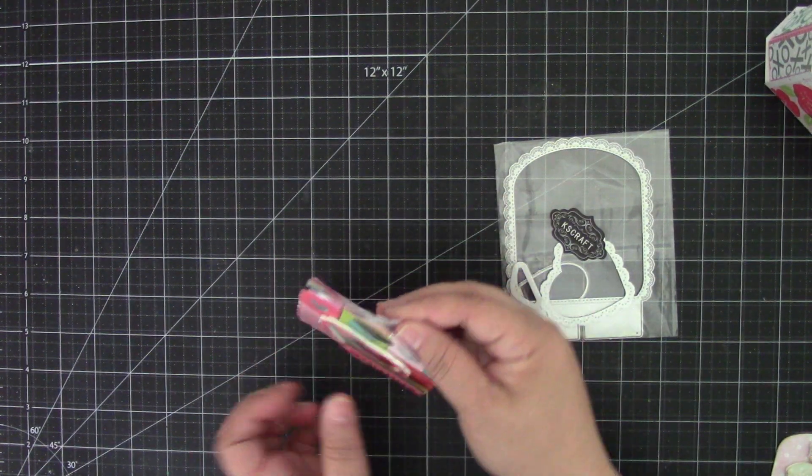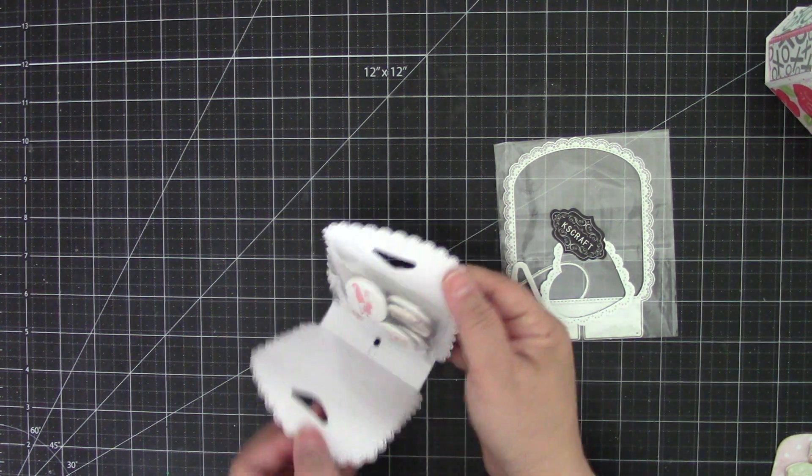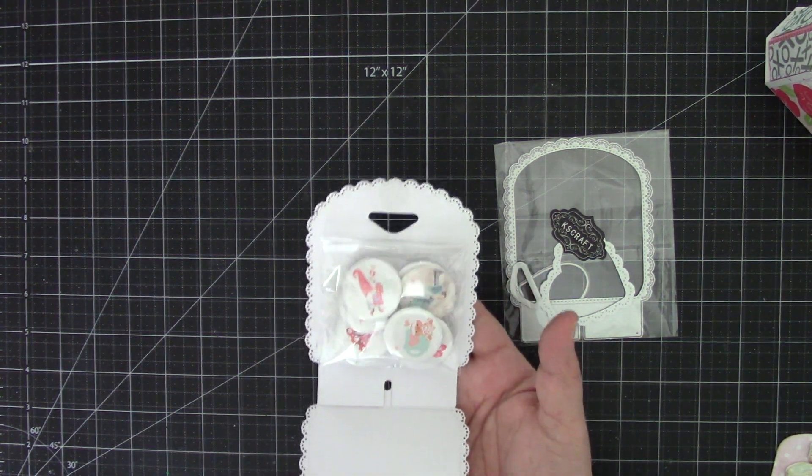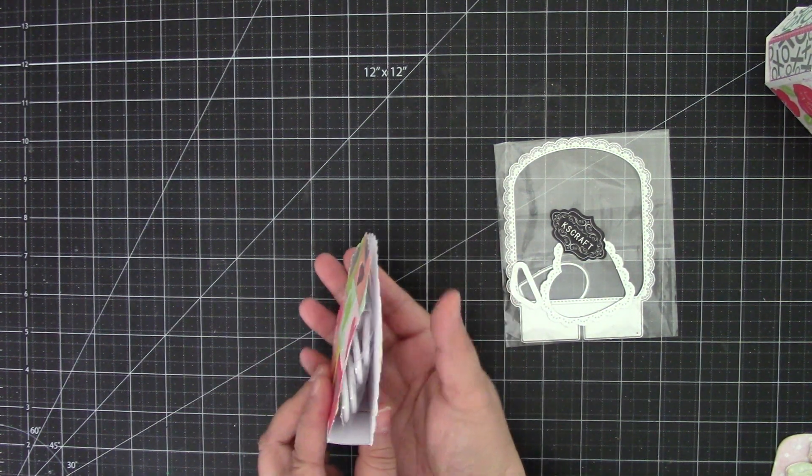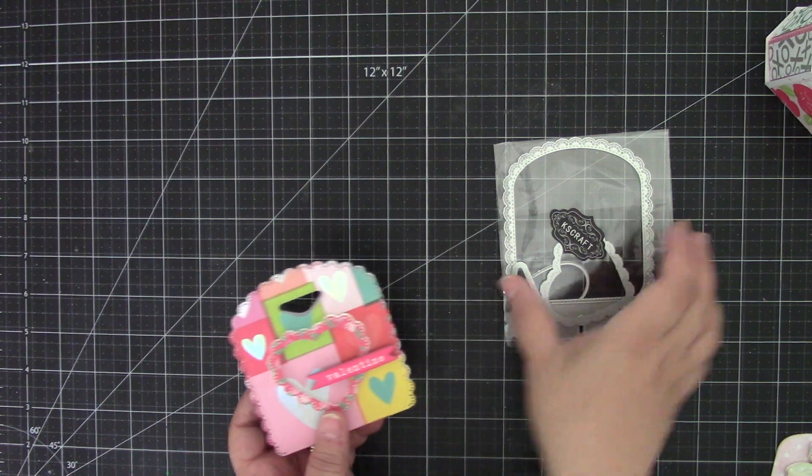So I just added some velcro on the top for the closure. And then I added some flare buttons inside. What a cute die set. So there's that one.